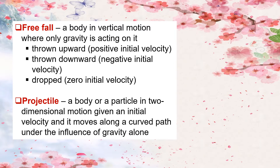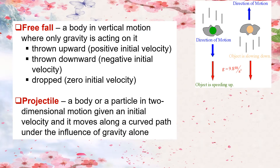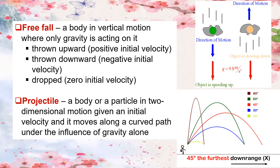Freefall is when a body is in vertical motion where only gravity is acting on it. It could be an object thrown upward (positive initial velocity), thrown downward (negative initial velocity), or dropped (zero initial velocity). A projectile, on the other hand, is a body or particle in two-dimensional motion given an initial velocity, moving along a curved path under the influence of gravity alone. In recent times, the motion of falling bodies has been studied with great precision. When air resistance can be neglected, all bodies experience equal acceleration regardless of their size and weight. This constant acceleration, g, is called the acceleration due to gravity. The standard value of g at or near Earth's surface is approximately 9.8 meters per second squared.